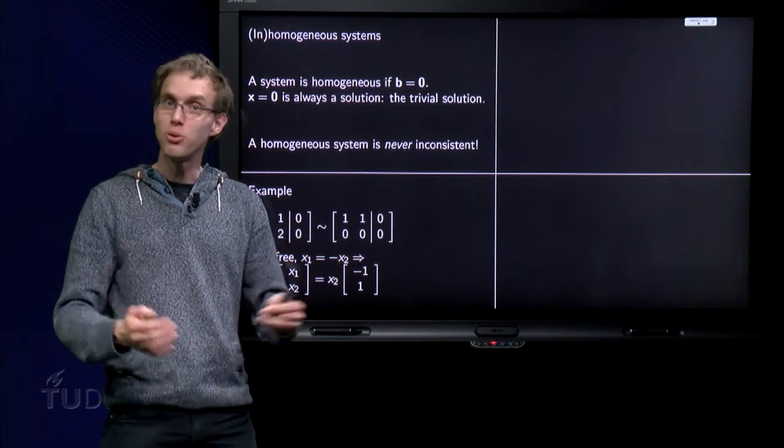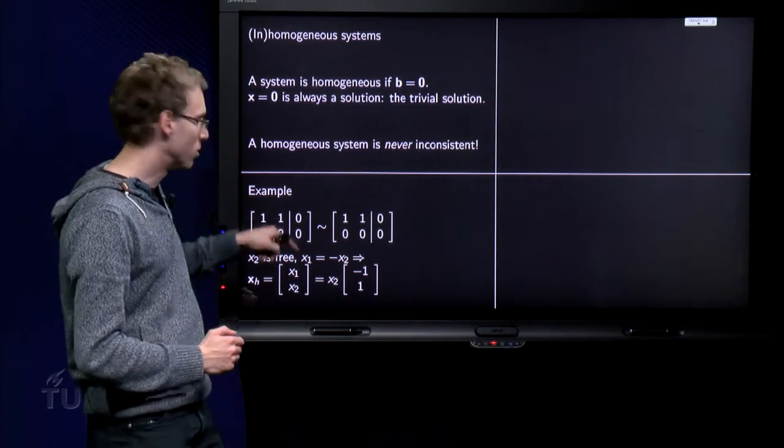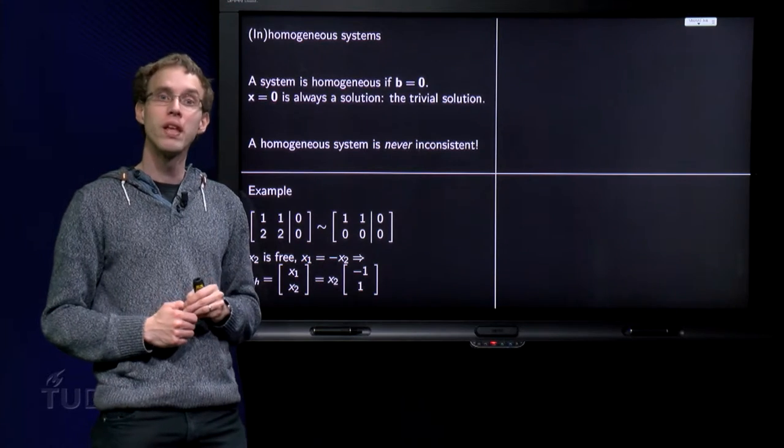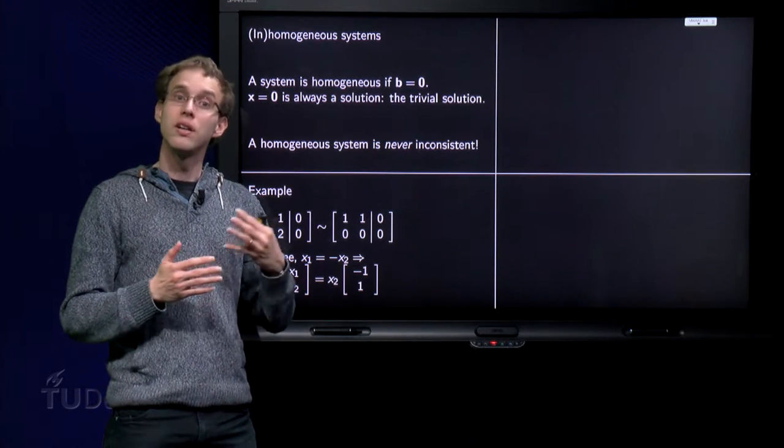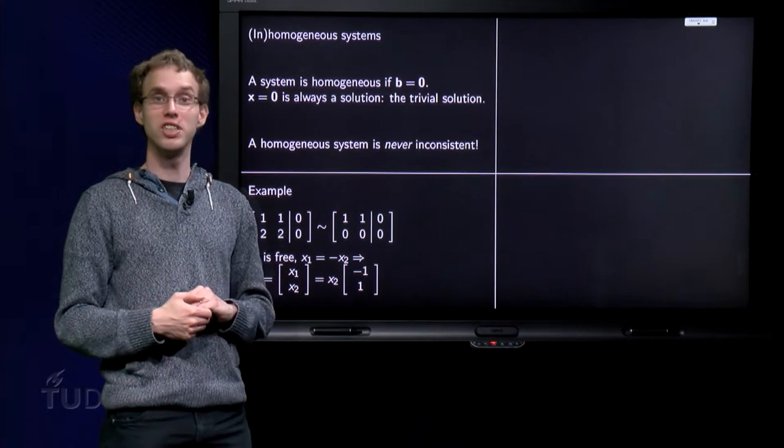Well, let us find a solution. So, we have to use row reduction, which is trivial. You can just reduce the two away. And then we are in echelon form. And then we see that we have no inconsistencies. Of course, it is a homogeneous system.